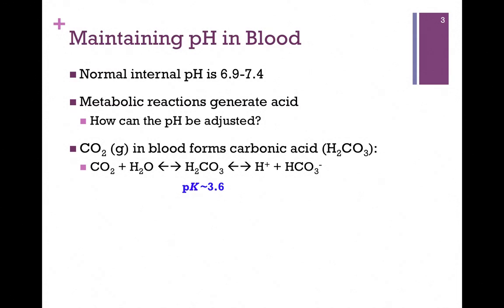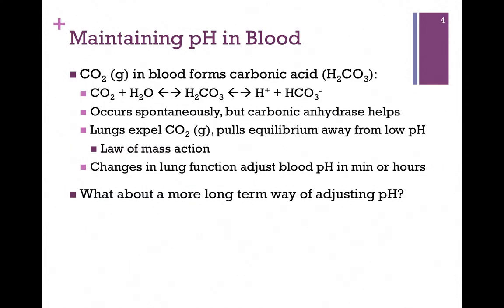The question is how do we use this equilibrium to buffer the blood? This equilibrium occurs spontaneously, but there's a rather impressive enzyme, carbonic anhydrase, that helps the process along. It can speed it up a billion or even a trillion fold, as we'll see when we get to Chapters 6 and 7.